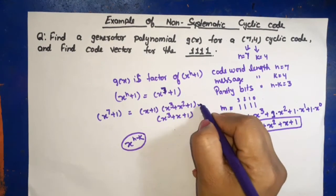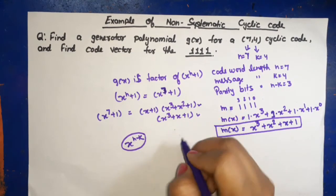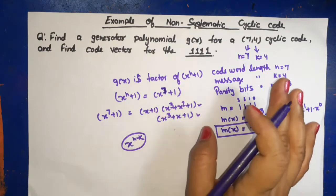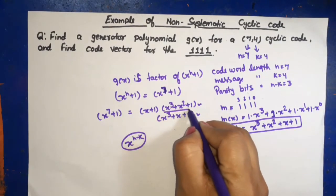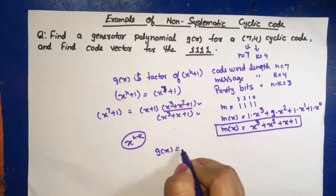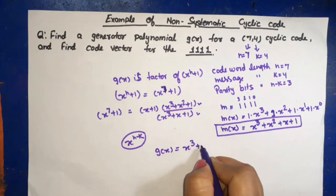Highest degree is this one. We have two terms, first and second, so we can opt in this case as per your choice. So we can opt g(x) is equal to x cube plus x square plus 1.